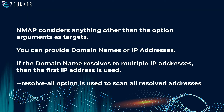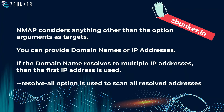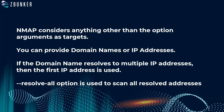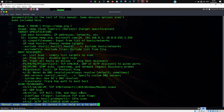Now we are going to learn target specification. Nmap takes anything except option arguments starting with a hyphen as a target. You can pass in a domain name like zbunker.in or an IP address like 10.0.2.1. If you pass a domain name, nmap first resolves it, and whatever IP address comes first is used to scan. If you want all resolved IP addresses included, you use the --resolve-all option.